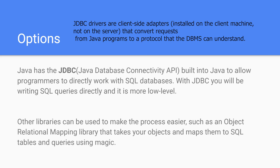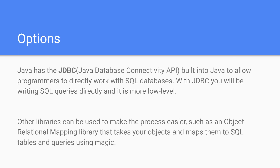With JDBC it's really low level — you're directly writing and crafting SQL queries from the bottom up and running them against the database. There are also object-relational mapping libraries that can take your Java objects and directly map them to SQL tables or queries, and even generate SQL code automatically from method signatures. As a starting point we're going to explore JDBC first because it's built into Java and it's very good to understand the fundamentals before moving to the higher-level libraries.